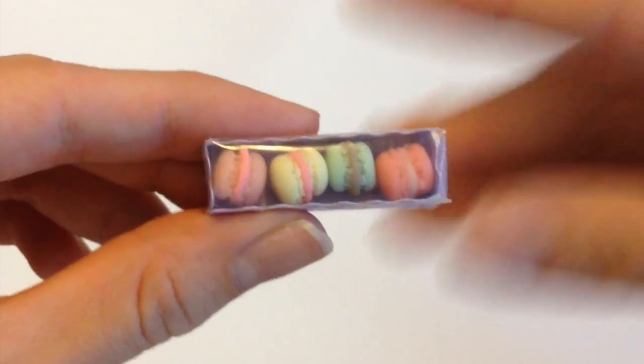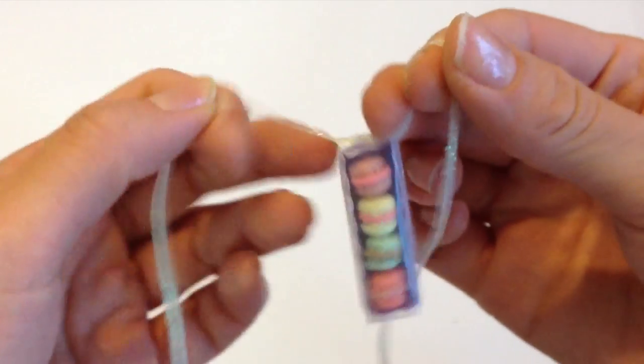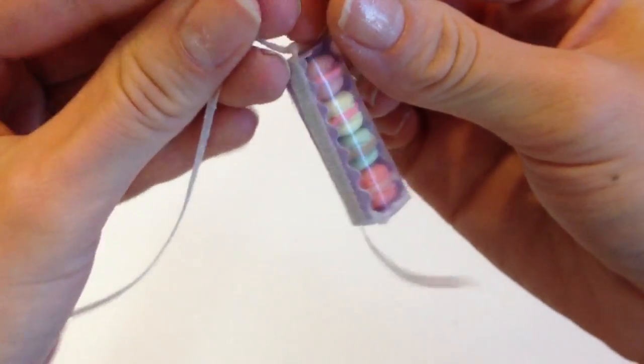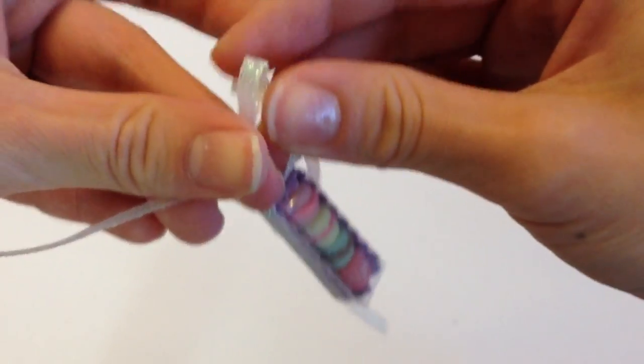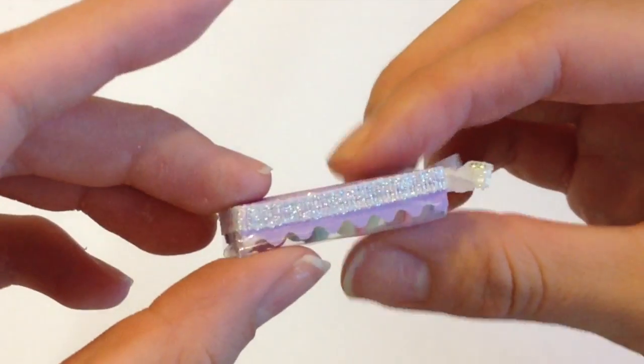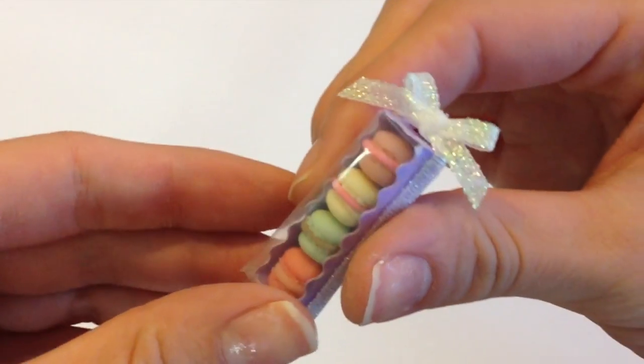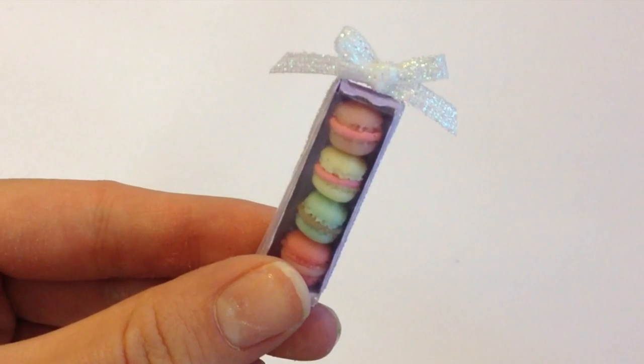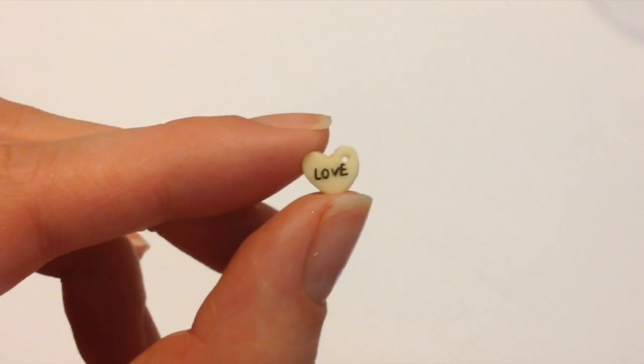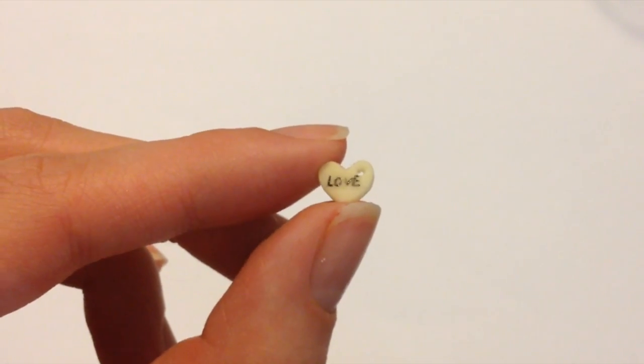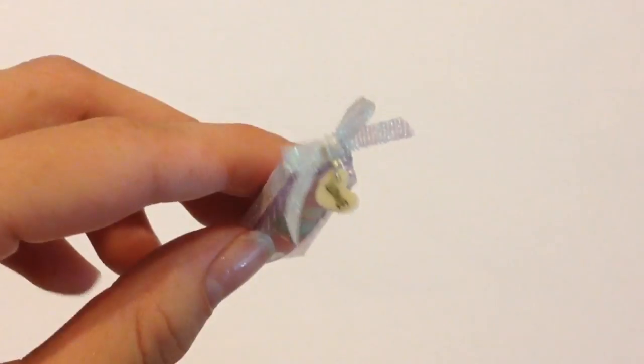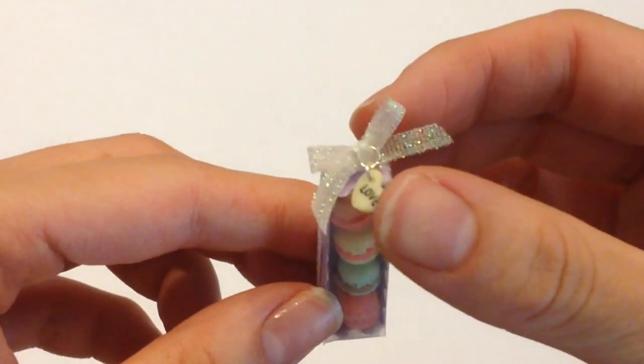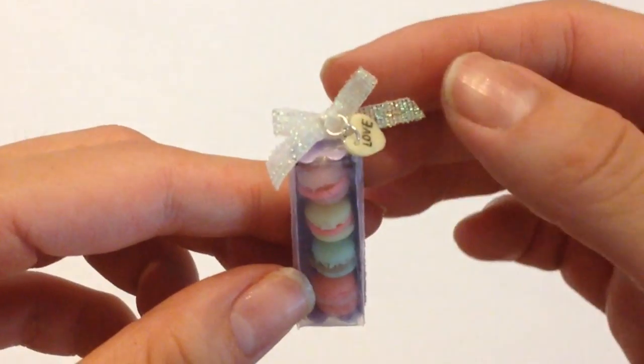For some extra detailing, I decide to take a thin piece of ribbon, wrap it around the box and give it a nice cute little bow on top. Of course, your box of macaroons is all done and you can stop right here, but I want to take it an extra step and I'm going to add a tiny little tag onto my box. And this one says Love, and I just went ahead and used some eyelets to stick it on the very top.